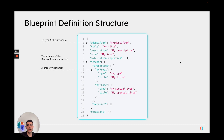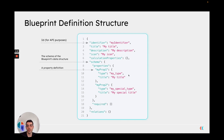Each blueprint follows the same structure. First, we have the identifier, which is a unique ID used for programmatic access, API purposes, and to uniquely identify each of our blueprints. Then we have the actual schema, which defines the set of properties that every blueprint has.